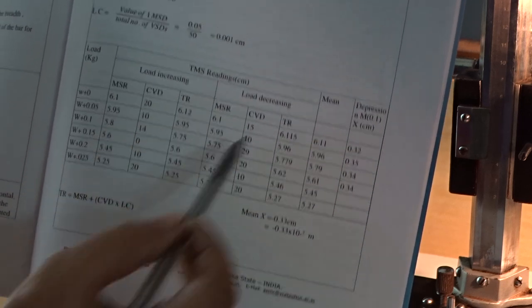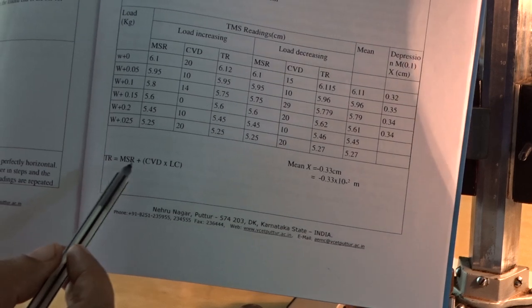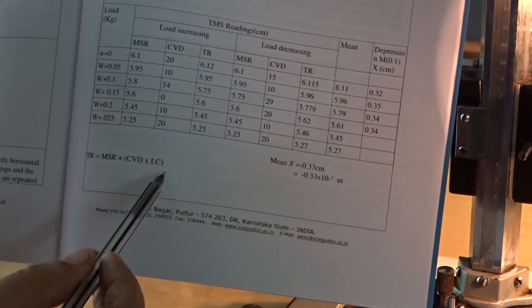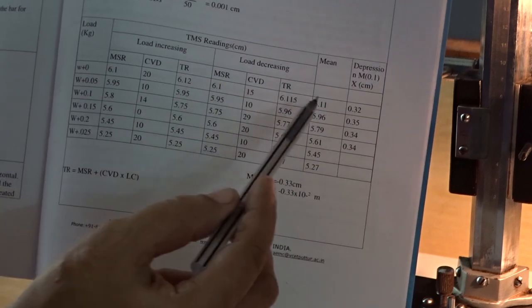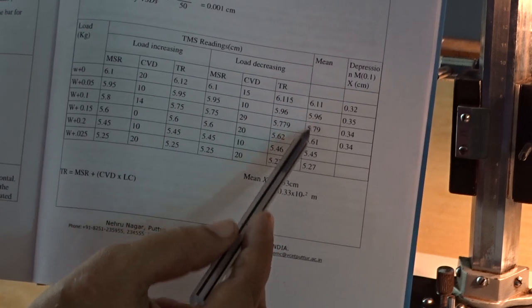Write total reading now. Total reading is equal to MSR plus CVD into least count. We write that here. And take mean of that total reading which is written here as 6.11 like that.